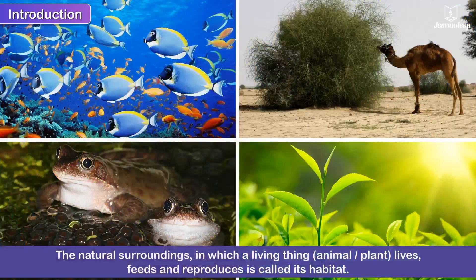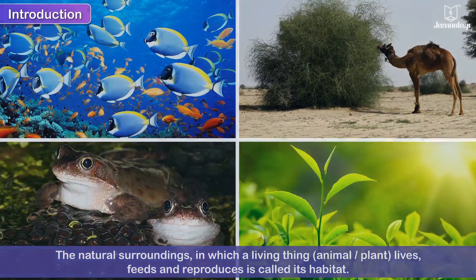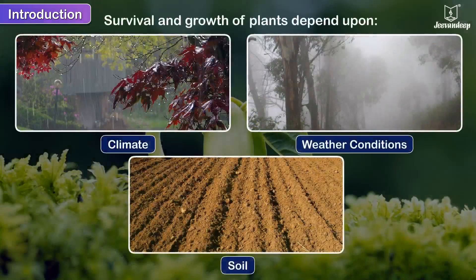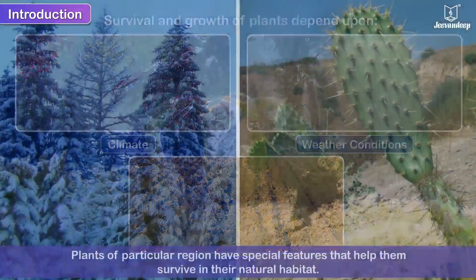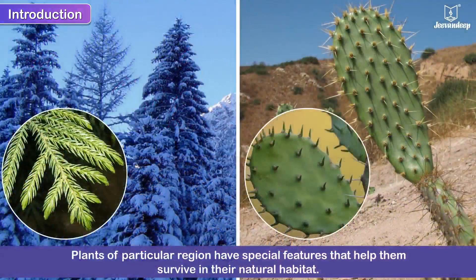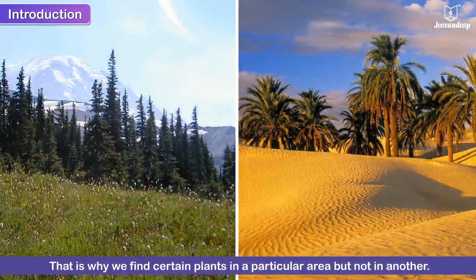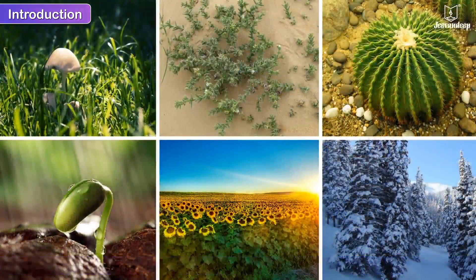The natural surroundings in which a living thing, i.e. animal or plant, lives, feeds and reproduces is called its habitat. The survival and growth of plants depend upon the climate, weather conditions and soil of the place. Plants of a particular region have special features that help them survive in their natural habitat. The process of developing certain features to suit one's environment is called adaptation. That is why we find certain plants in a particular area but not in another.